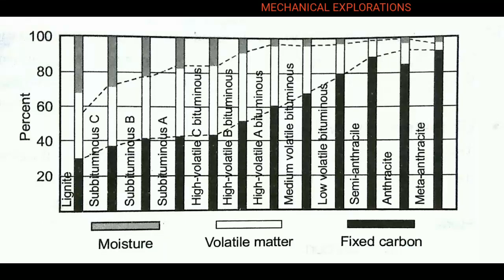Now you can see in this graph the moisture, volatile matter, and fixed carbon — shown at percentages of 20, 40, 60, 80. The coal types shown are lignite, sub-bituminous, high volatile, medium volatile, low volatile, semi-anthracite, anthracite, and meta-anthracite.